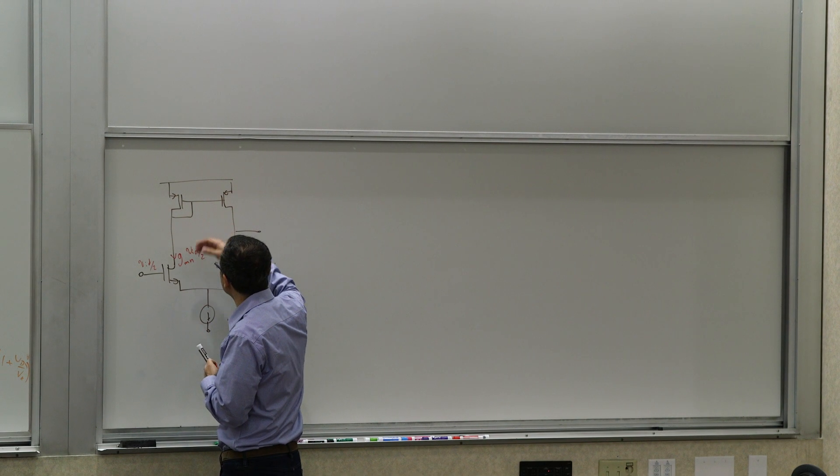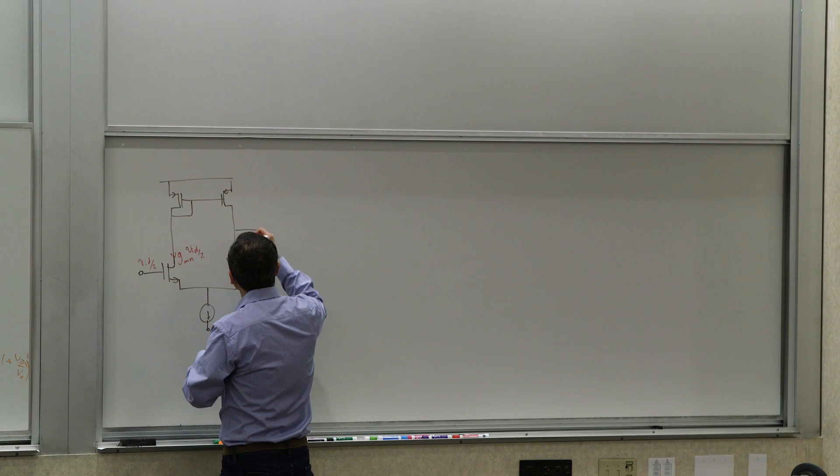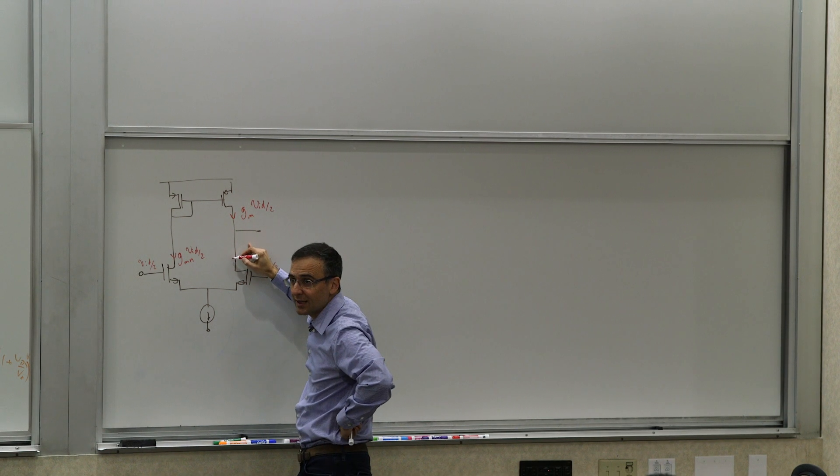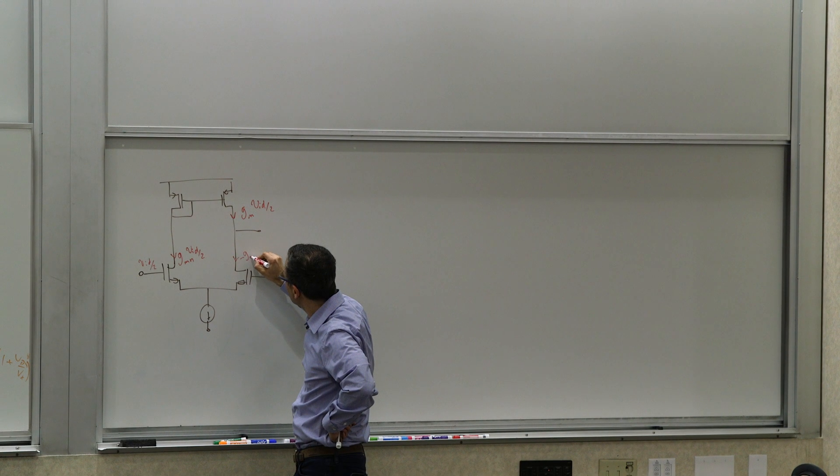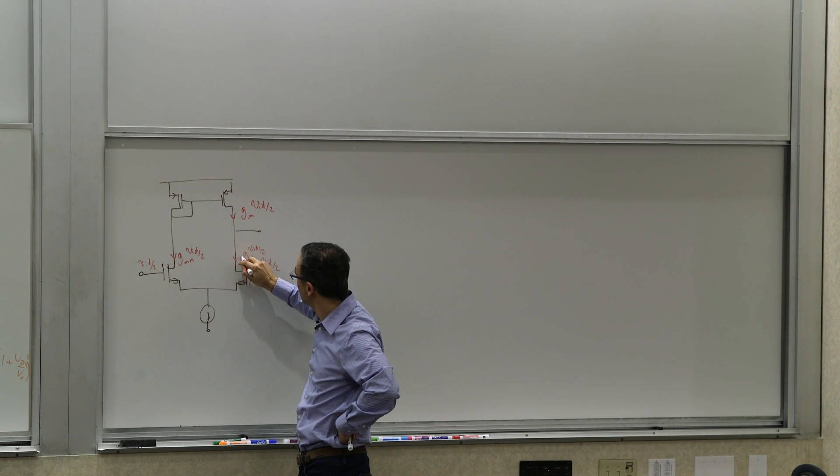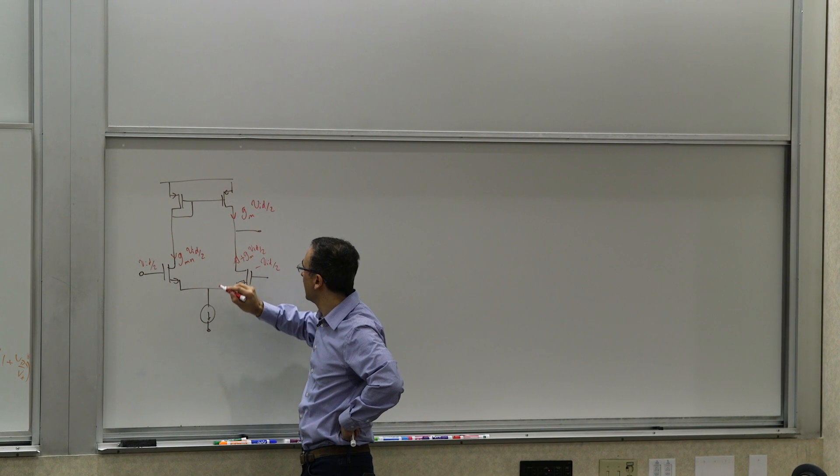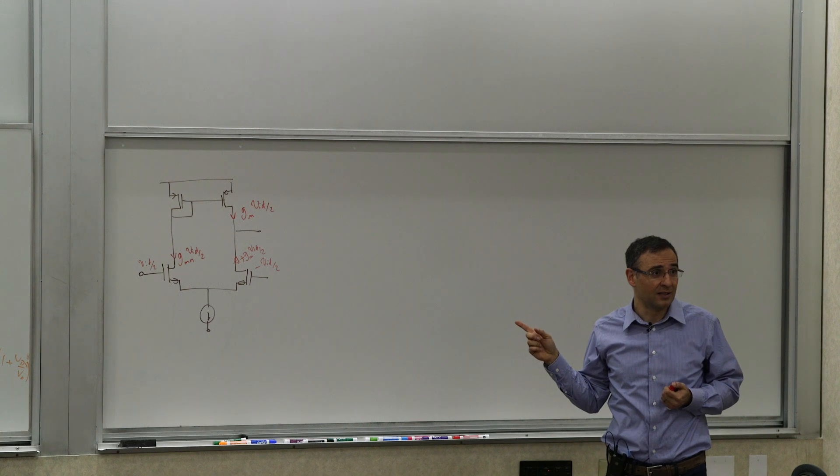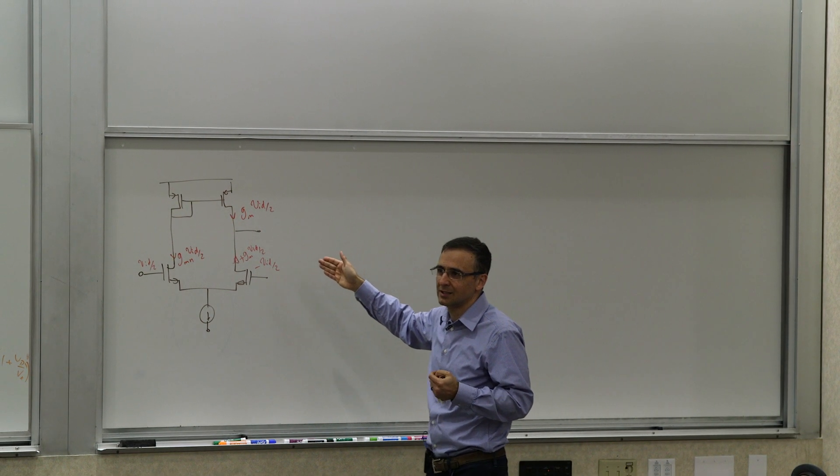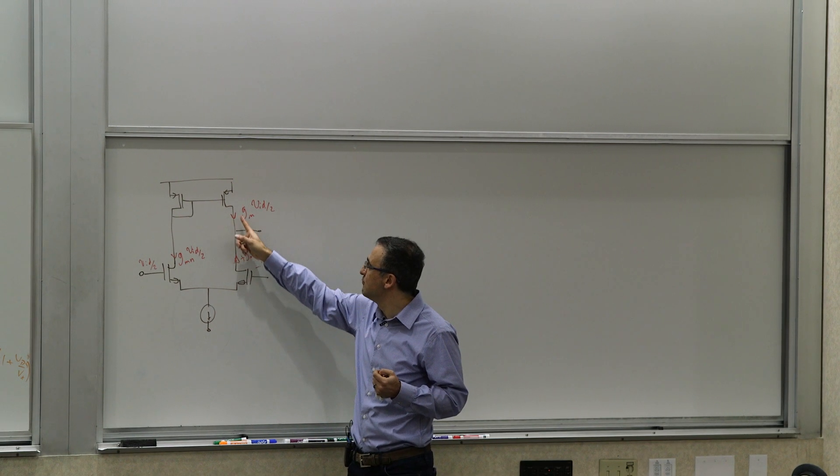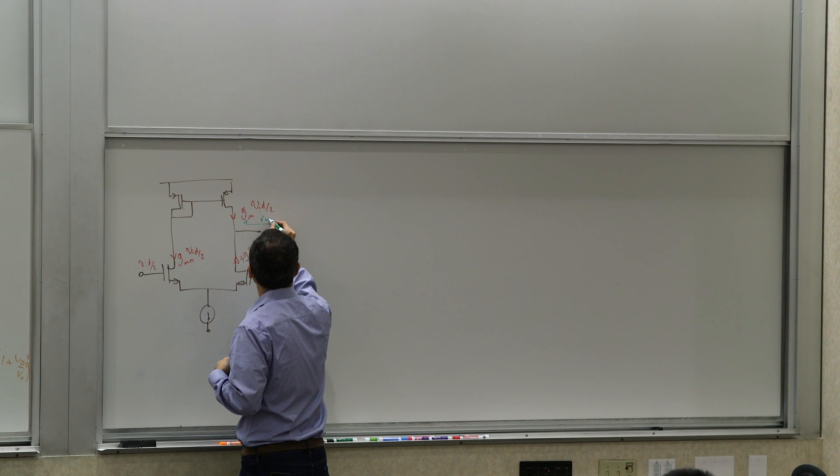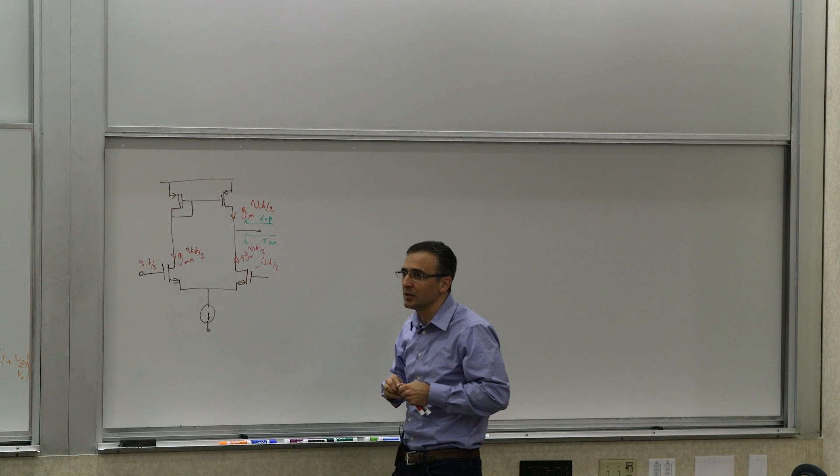So we have to choose a W over L for each one of these things. But before we do that, this current is going to be now reflected down here. So this current is going to be GMVID over 2. Now, this current going in was the important part. This going in is going to be negative GMVID over 2, which you can actually flip the polarity. So you can make this plus and make it point into the node again. So now they're additive.